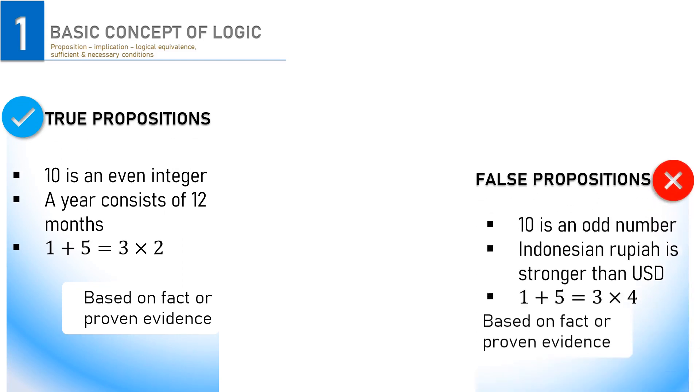On the other hand, we have the following propositions which are all false. 10 is of course not an odd number, Rupiah has never been stronger than USD, and the last statement is not an equation because the left side expression, 1 plus 5, is not equal to the right one, 3 times 4.